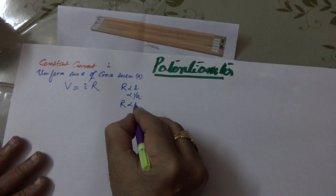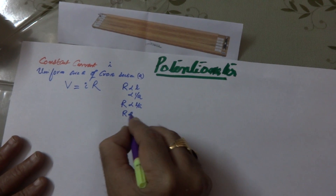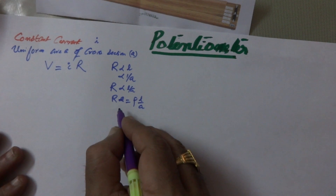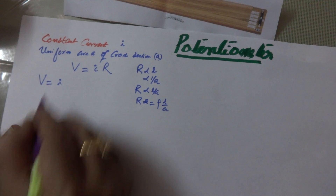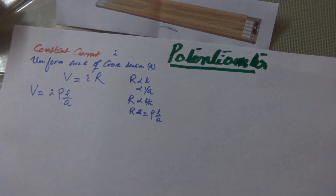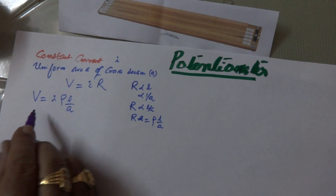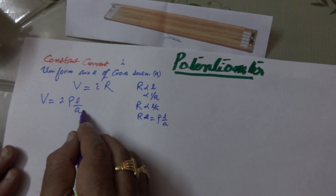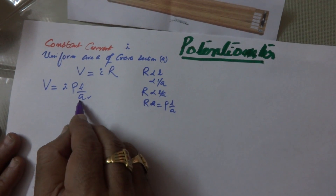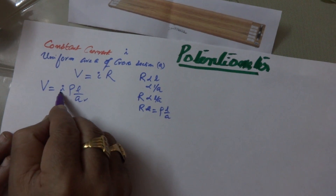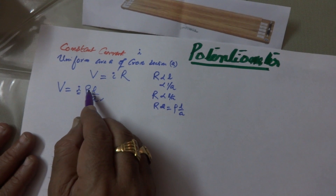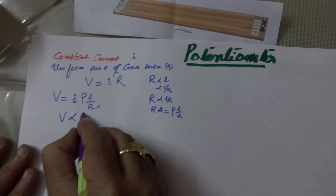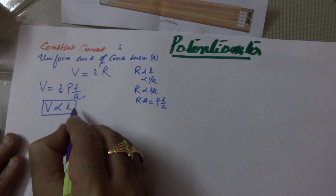R is directly proportional to L by A. R is equal to rho times L by A, where the proportionality constant rho is known as specific resistance. I can replace R by rho L by A. So potential is equal to I times rho times L by A. Since A is uniform, it is constant. When we send constant current, I is also constant. Specific resistance for any material is constant. Therefore I, rho, and A are all constants, and V is directly proportional to L. In this way, we can explain the principle of potentiometer.